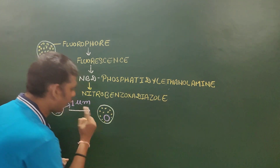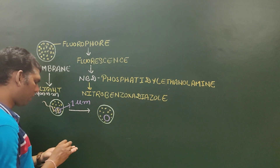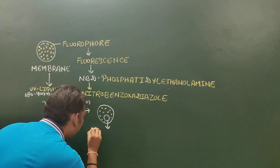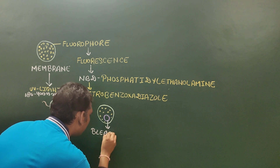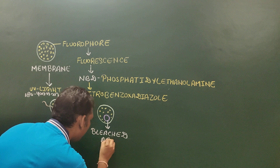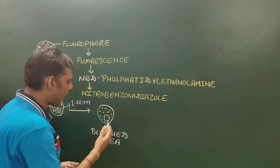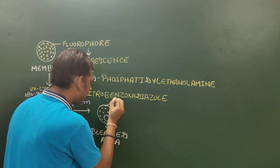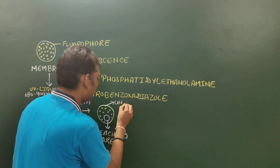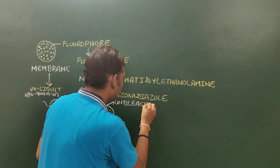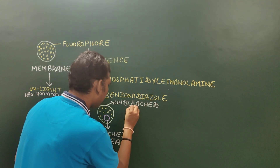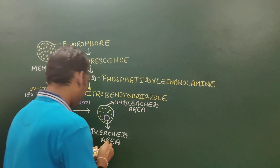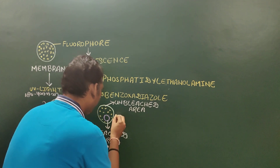The area which lost its fluorescent property is termed the bleached area. The area around the bleached area which still has the property of fluorescence — that is, which still contains fluorophore molecules — is termed the unbleached area.